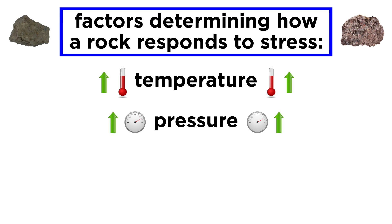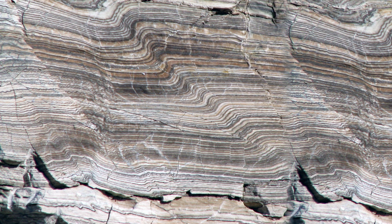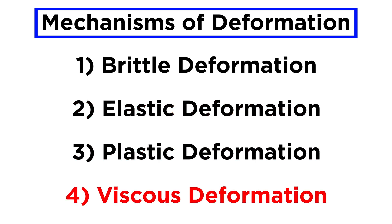As the pressure and temperature of a rock are increased, its strength, or viscosity, decreases, making it more willing to deform. Rocks respond to stress by becoming strained, and the precise response to stress is described by four different mechanisms: brittle deformation, elastic deformation, plastic deformation, and viscous deformation.